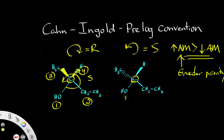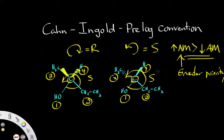Moving to the next molecule: oxygen is priority 1, followed by 2, 3, and 4. Counting in this direction gives an S configuration initially, but we need to invert because our lowest priority group is pointing toward us as indicated by the wedge. After inversion we end up with an R configuration. So, if the lowest priority group points away, keep the configuration; if it points toward you, simply invert.